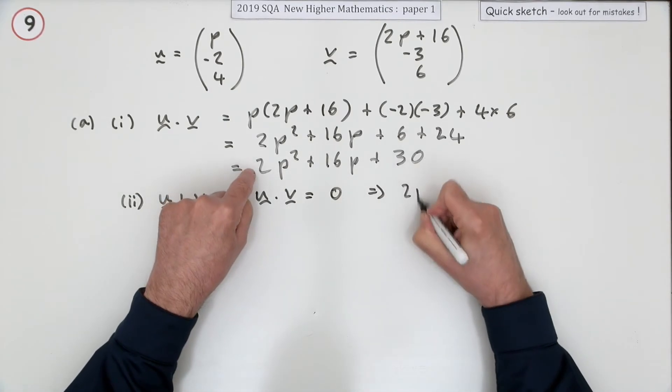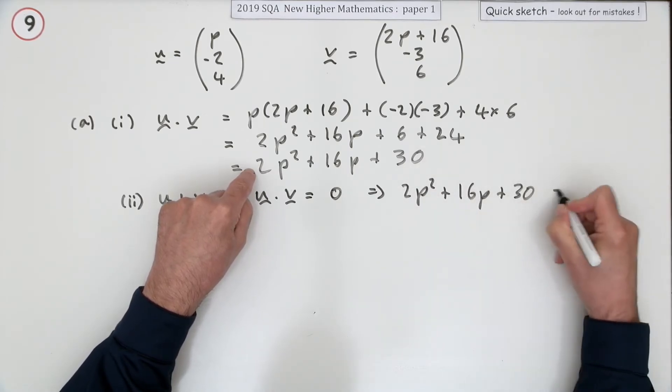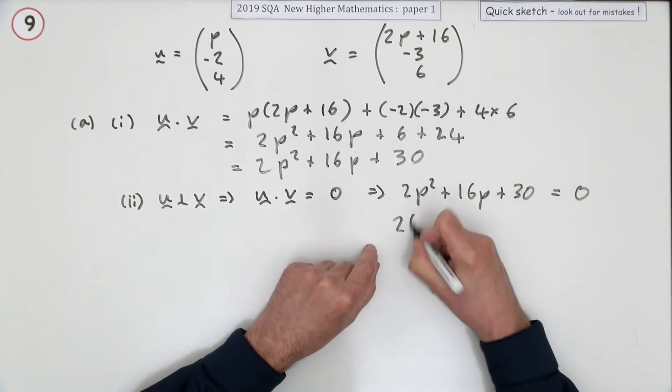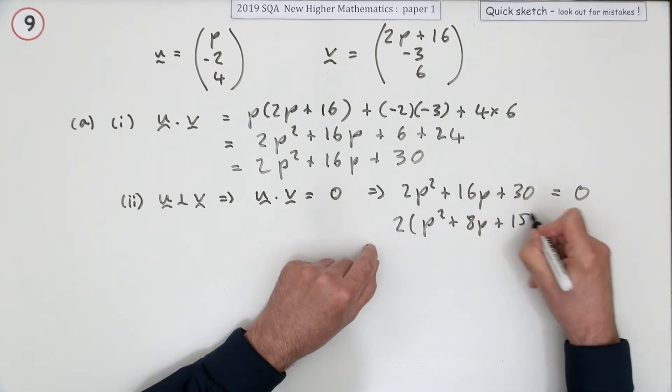Which means that this thing, 2p² plus 16p plus 30, should equal zero. So another quadratic. Factorize it - we'll take that 2 out: p² plus 8p plus 15.